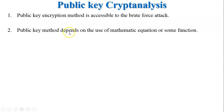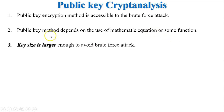Second, public key methods depend on the use of mathematical equations or functions. Algorithms like RSA or Diffie-Hellman are totally based on mathematical equations. If a very small value is used in these equations, a hacker or attacker can easily decrypt the message. Third, the key size must be large enough to avoid brute force attacks.